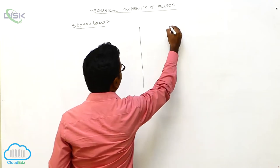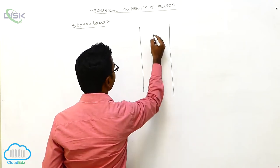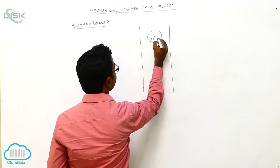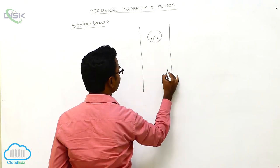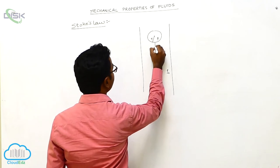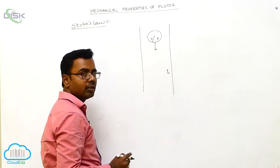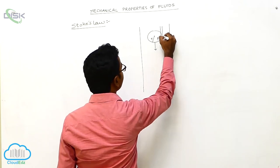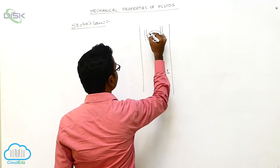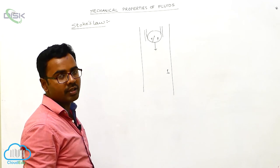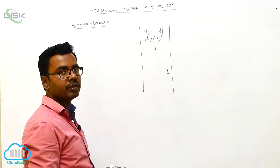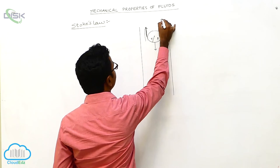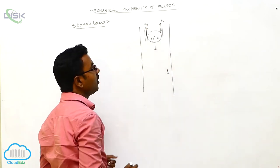Consider a liquid or fluid column. There is a sphere having radius R and density rho falling down in it. The fluid has density rho-not. As the sphere falls down, it drags the layers of fluid along with it. Motion is set up between adjacent layers of the fluid, and viscous force starts to act in the upward direction.